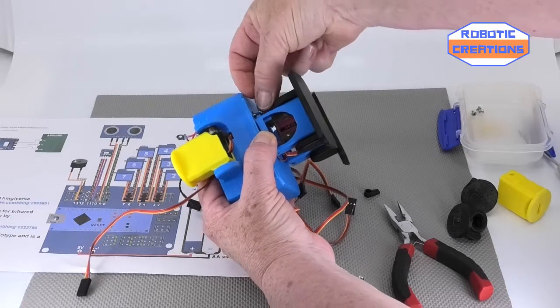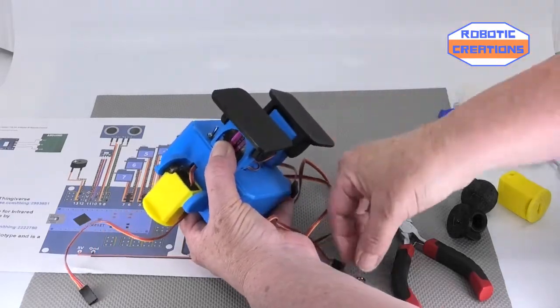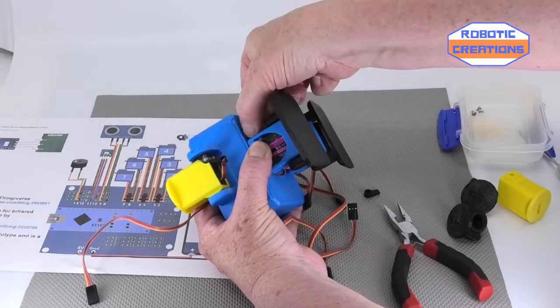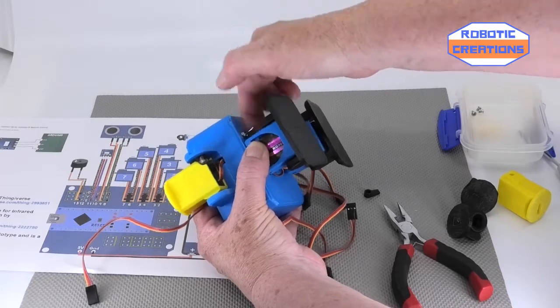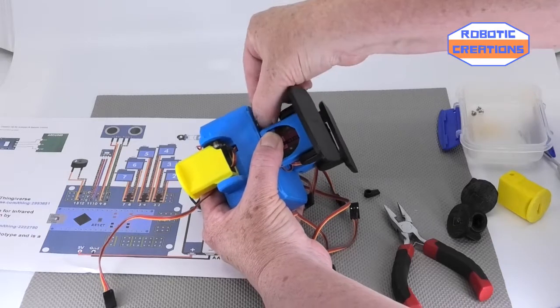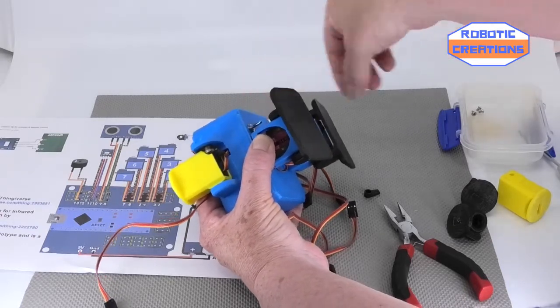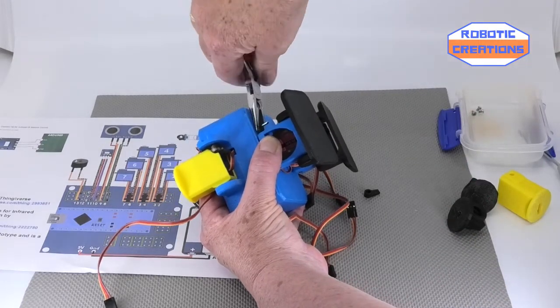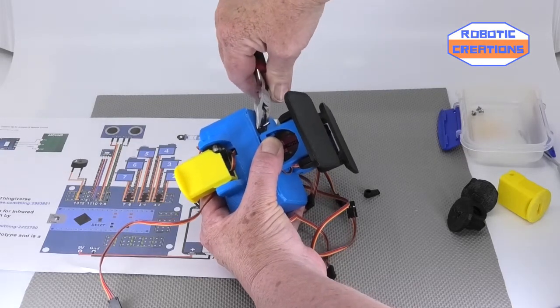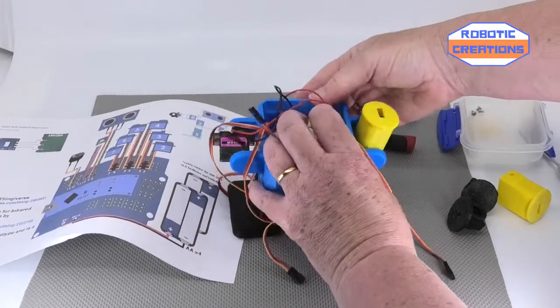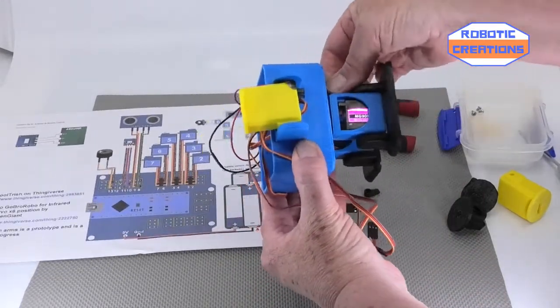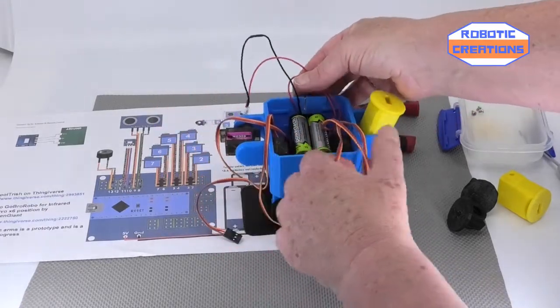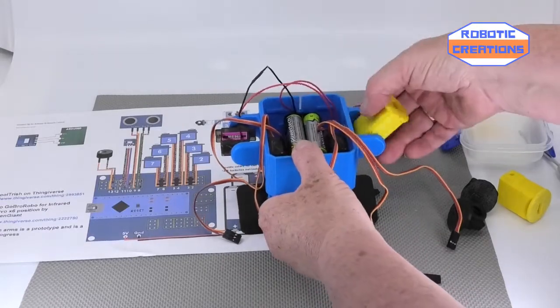Washer first, like this. It just takes little fingers, so your students will find this easier than adults probably. Hand tighten, finger tighten I should say, and then I'll just get the pliers to finish that off or you can get a small spanner. That's it. Just make sure it switches on and off, no movement. That's fine.